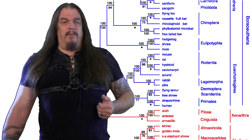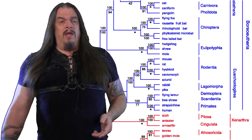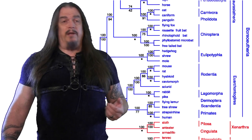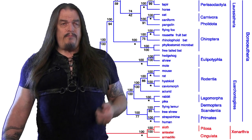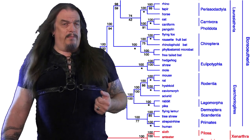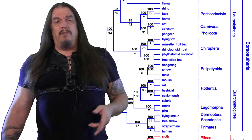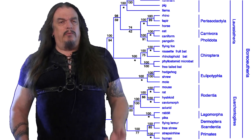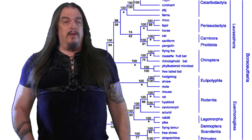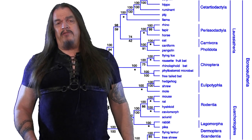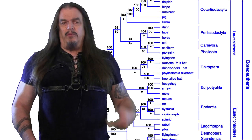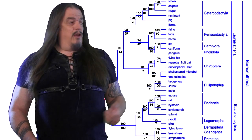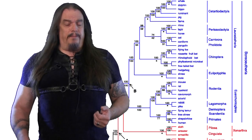Each of these modern mammal groups, which still exist today, have their own diagnostic characteristics, some of which we'll talk about in upcoming episodes. There are also a few other mammalian orders that aren't listed here because they're all extinct and we don't have their DNA. We only know about them through fossils, and we can tell where they should go in this tree based on their morphology — but the earliest examples of all of these were strikingly similar to each other.